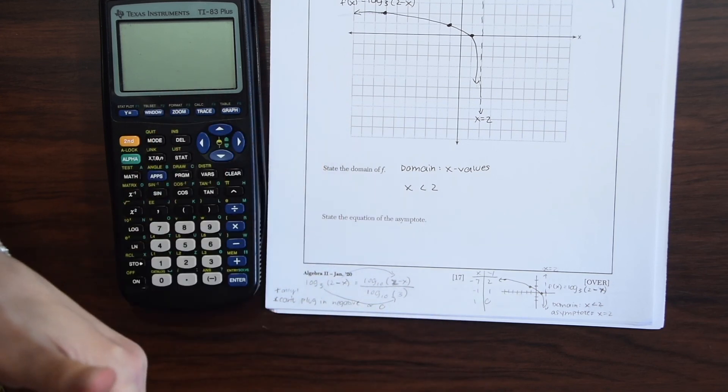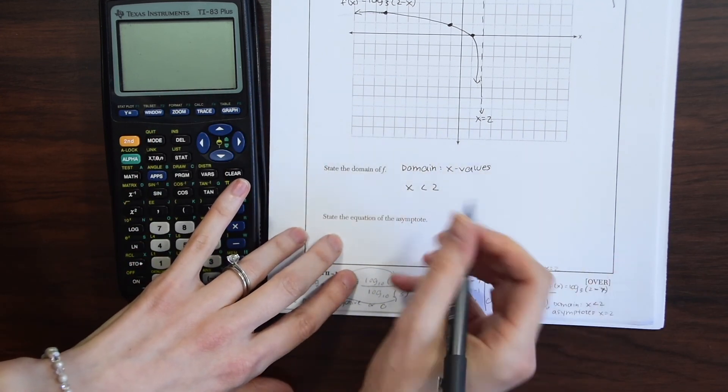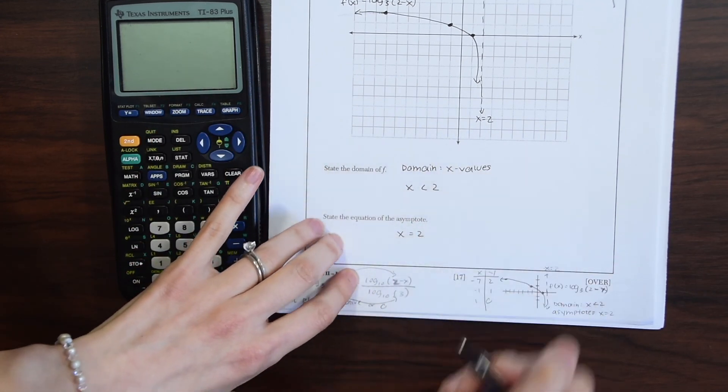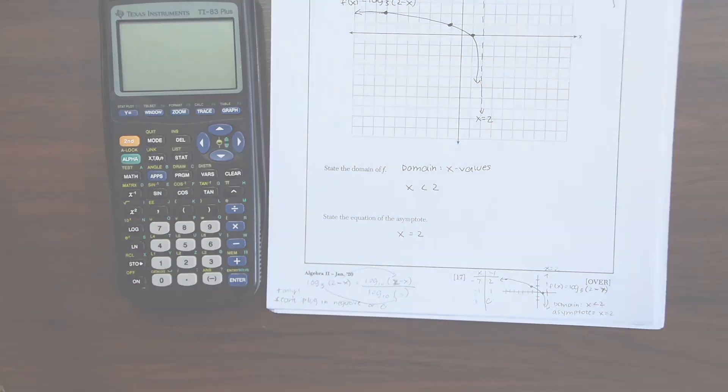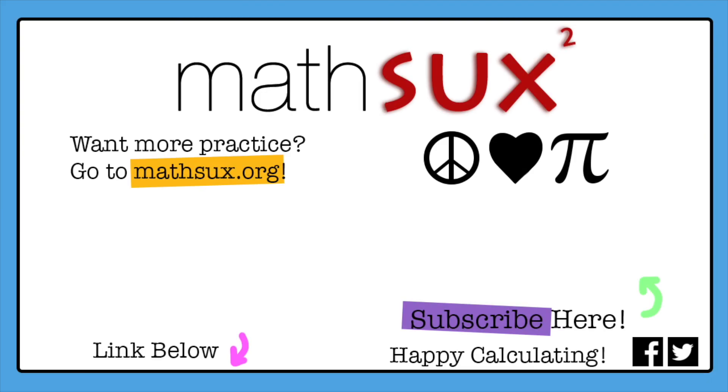Now state the equation of the asymptote. We already did that over here. This is just going to be x = 2. And that's our answer. Need more practice? Check out MathSucks.org for more questions, link below. Also don't forget to subscribe. Happy calculating!